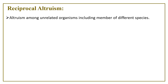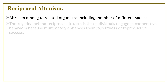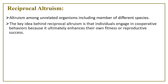Coming to the next part: reciprocal altruism. This concept was popularized by Robert Trivers in his 1971 paper entitled 'The Evolution of Reciprocal Altruism.' This is actually altruism among unrelated organisms, including members of different species. The key idea behind reciprocal altruism is that individuals engage in cooperative behaviors because it ultimately enhances their own fitness or reproductive success, and in future, it will expect some help in return from that very recipient.